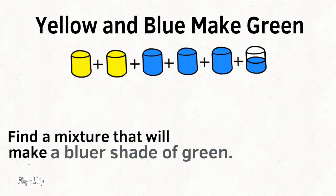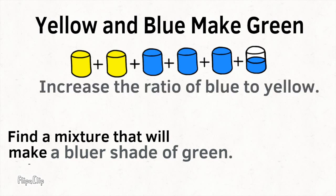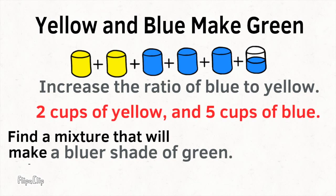Find a mixture that will make a bluer shade of green. So now we're not going to have the same ratio. To make a bluer shade of green, we need to increase the ratio of blue to yellow. The number of cups of yellow paint will remain the same, but we'll increase the number of cups of blue paint. To make a bluer shade of green, we'll use 2 cups of yellow paint and 5 cups of blue paint.